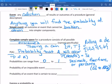So the probability of an impossible event, something that can't happen, is zero. And the probability of an event that's certain to occur, definitely going to happen, is one.